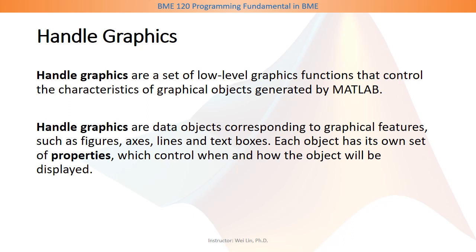Each object has its own set of properties which control when and how the object will be displayed. For example, for a figure window, it has the following properties. Its position defines where the figure window will be displayed on the screen. The size defines how big the figure window is. The background color defines the background color of the figure window. Of course, the figure window has more properties than those three, and if you change their values, you can change the appearance of the figure window.